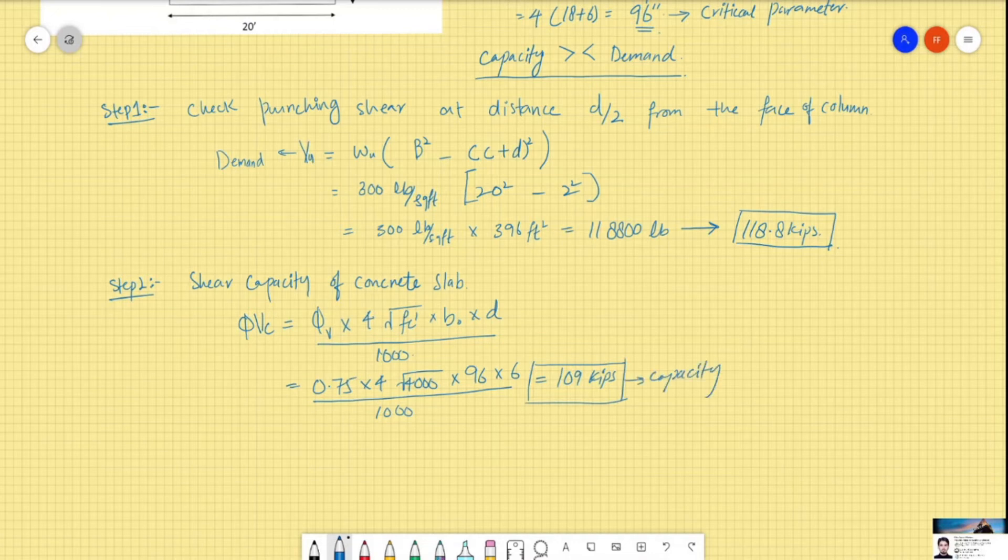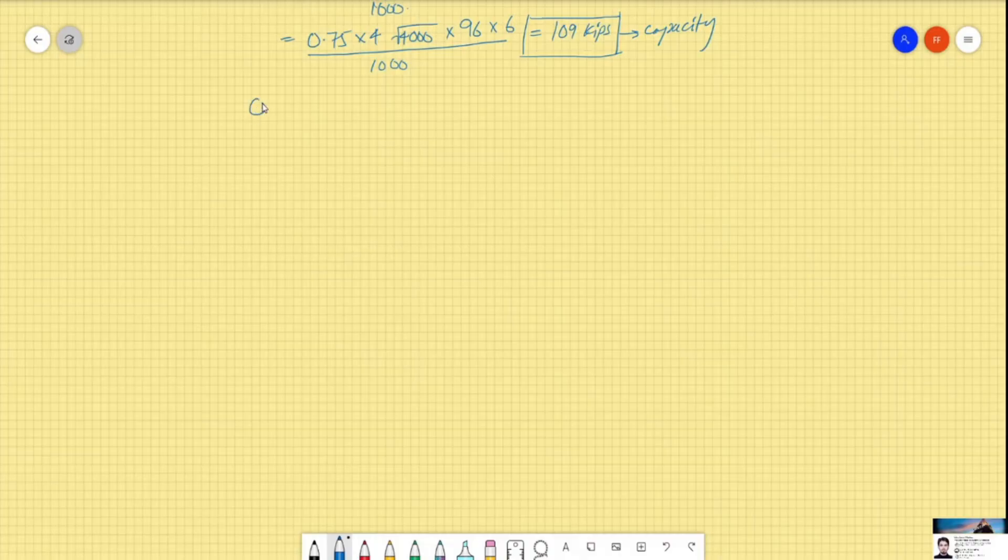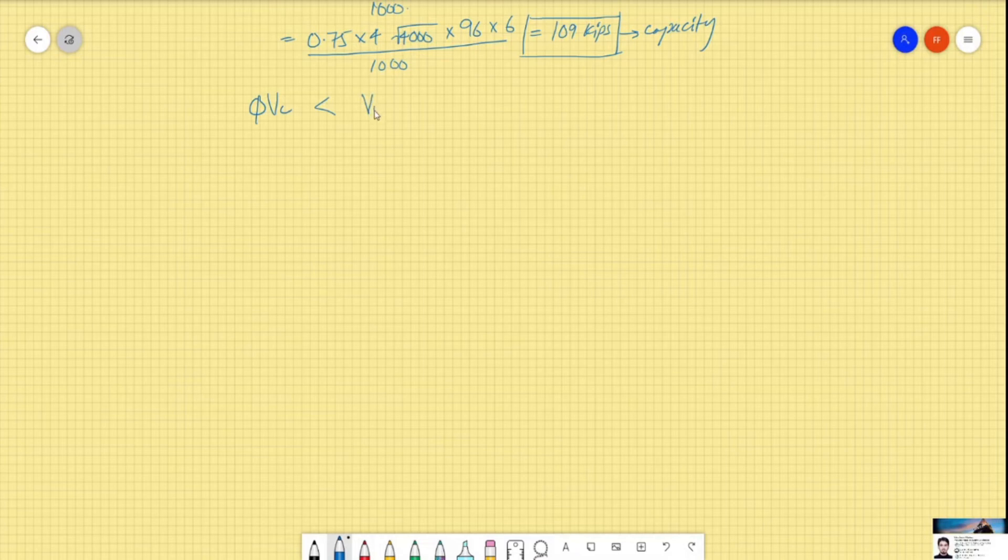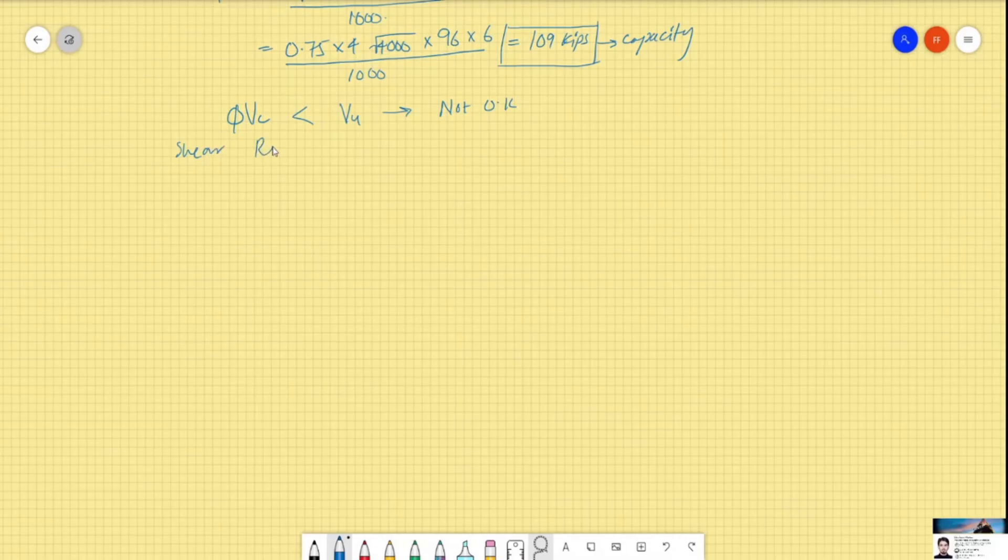So now we can see that the capacity is lower than our demand. Phi Vc is lower than our demand, so that means we need to design the shear reinforcement, or we have to design our slab for shear also.